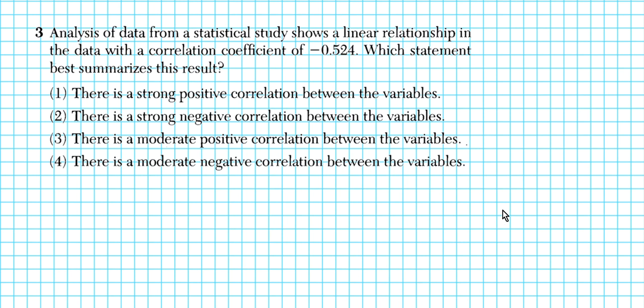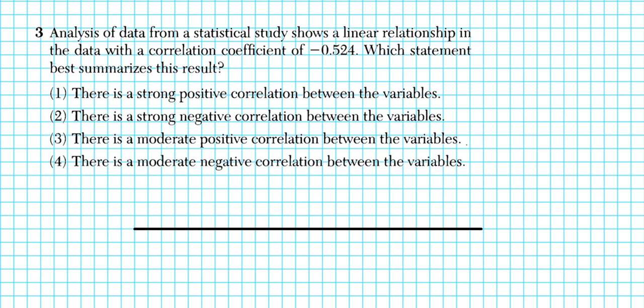Let's take a look at question 3. It says: analysis of data from a statistical study shows a linear relationship with a correlation coefficient of negative 0.524. Which statement best summarizes this result? We're looking at whether it's a strong positive, strong negative, moderate positive, or moderate negative correlation. To put everything in perspective, let's draw a number line going from negative 1 to 1.